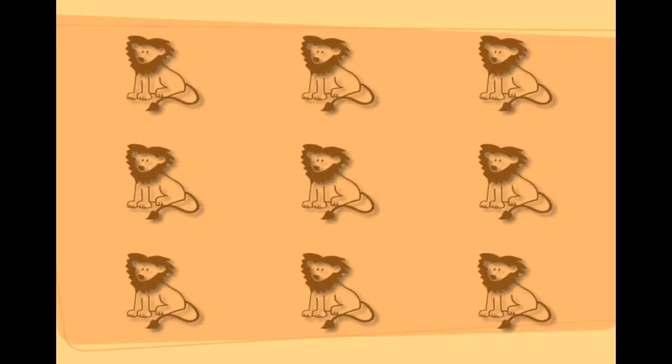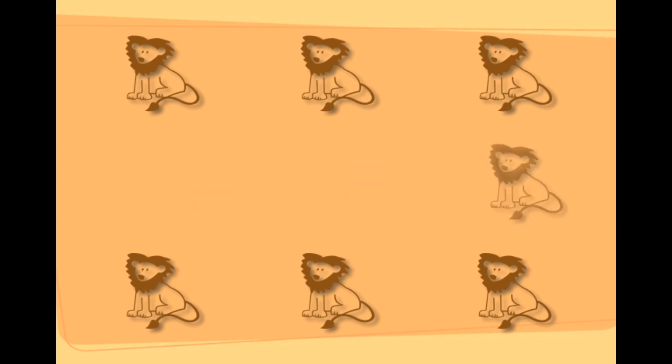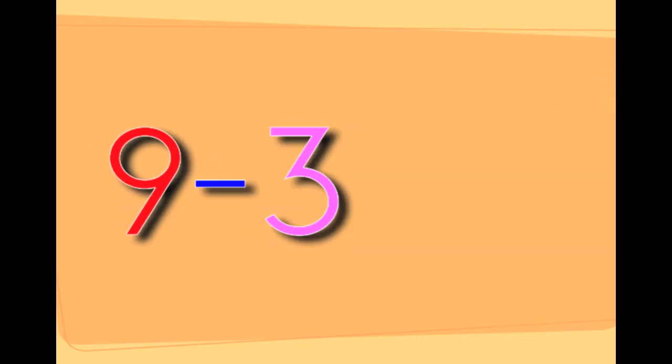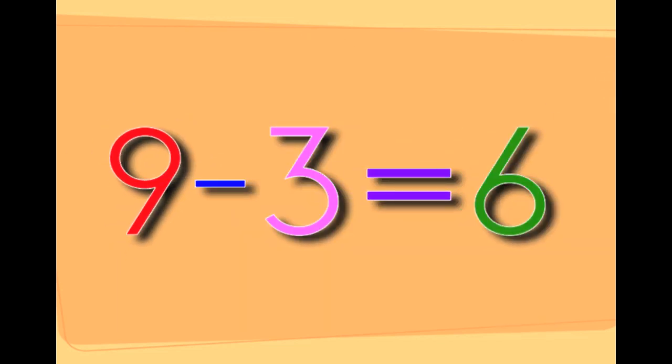There are nine lions. Taking three lions away from the nine lions leaves you with six lions. Nine minus three equals six.